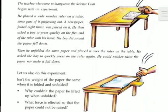In the beginning of the lesson, on the first page, you can see two experiments. The science teacher who had come to inaugurate the science club began it with an experiment. First he placed a wooden ruler on a table, with some part of the ruler projected outwards. Then a newspaper, folded eight times, was placed on top of the ruler. He then asked the boy to press quickly on the free end of the ruler with his hand. The boy did it and the paper fell down.